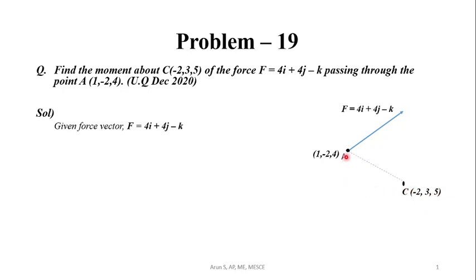To solve this, we determine the position vector of A with respect to point C. The position vector is given by (1 - (-2))i + (-2 - 3)j + (4 - 5)k. Simplifying, we get 3i - 5j - k.